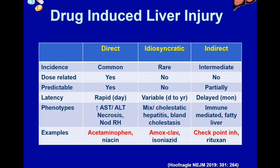The classic drug that does this is acetaminophen — a universal dose-dependent hepatotoxin — and another example is niacin. These are still on the market because they've been available for over 50 years and have a therapeutic niche. But what we're most interested in is the unpredictable or idiosyncratic drug-induced liver injury, which is rare as opposed to common, usually not dose-related, not predictable — hence why we call it idiosyncratic. It can have a variable latency, which makes it difficult to detect, and the phenotype of injury can be highly variable. An example is amoxicillin-clavulanate and INH.